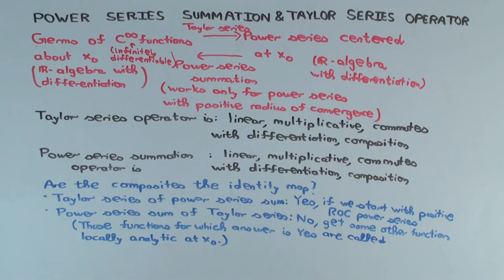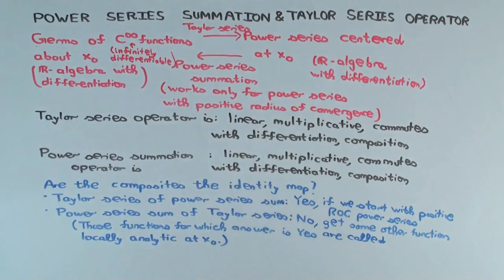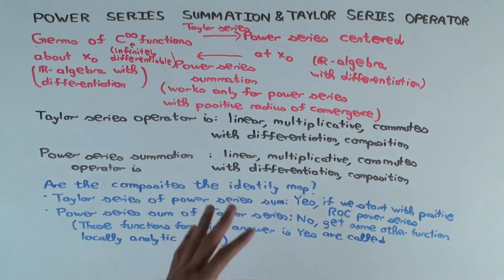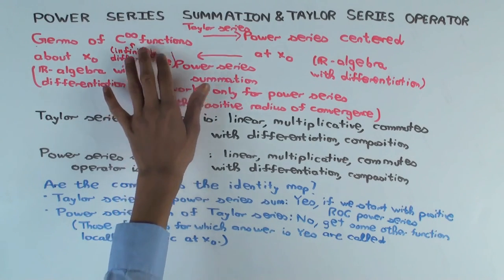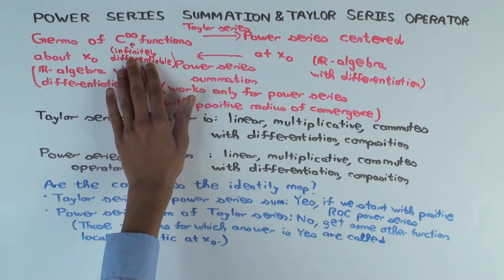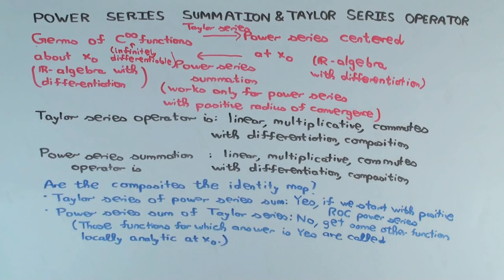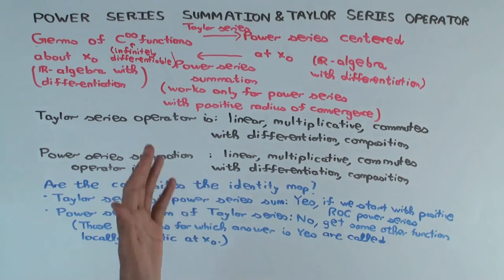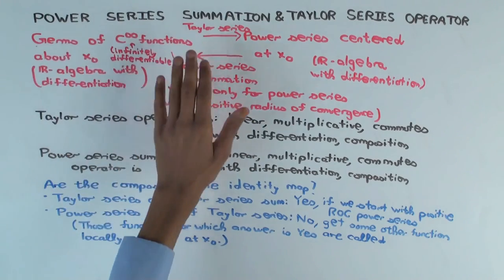We haven't dealt here with the issue of how large the radius of convergence is. You could have a C∞ function defined everywhere whose Taylor series at a point sums up to the function near that point, but doesn't converge to it everywhere — that's the distinction between locally analytic at a point and globally. We're not dealing with that issue here because we're just looking at germs.